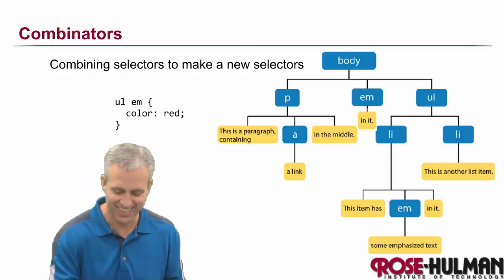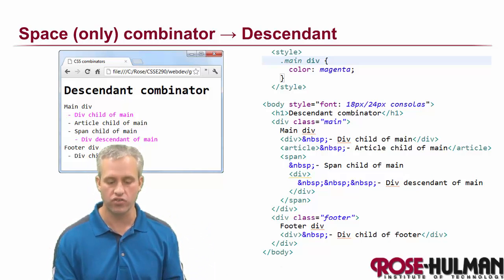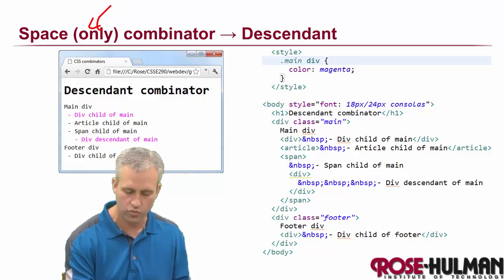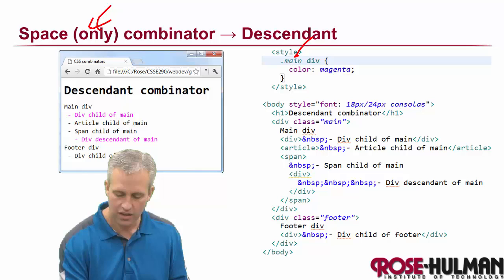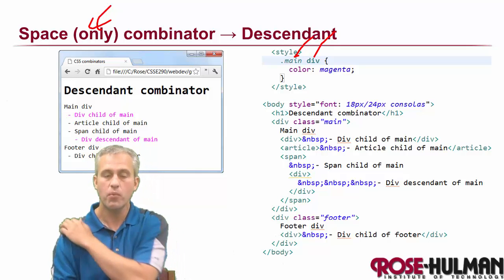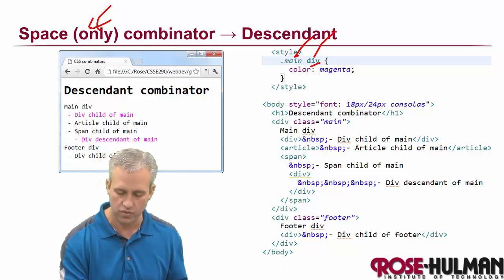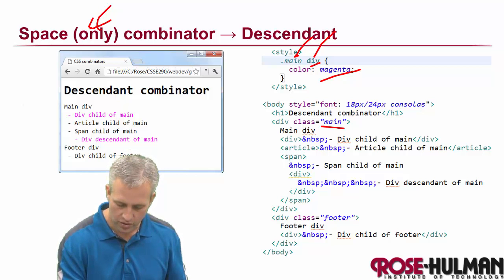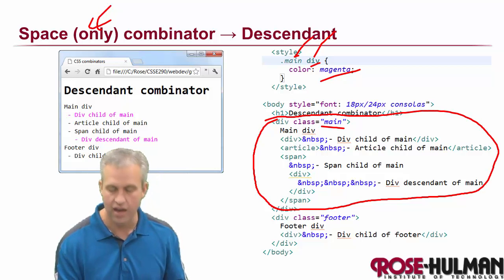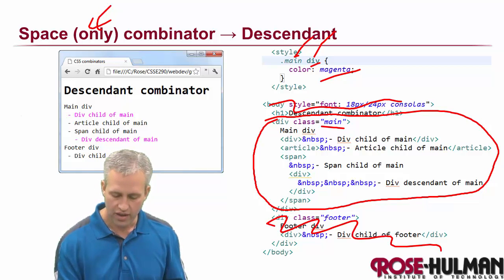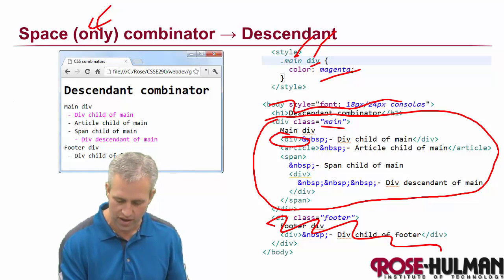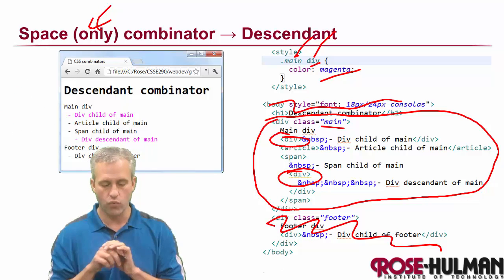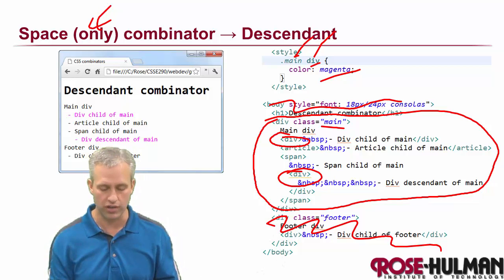There are four different combinators. The first is the descendant combinator — the one we've just seen. So here it's looking for divs within something that has the class 'main'. Most people read these from right to left — it's looking for divs to make magenta, and that div has to be inside something with the class 'main'. So we're only looking inside that block. Inside it we're looking for any div descendants, regardless of what level they're at. It doesn't matter where in the tree, just as long as it's somewhere in the tree. That's the descendant, or space-only, combinator.